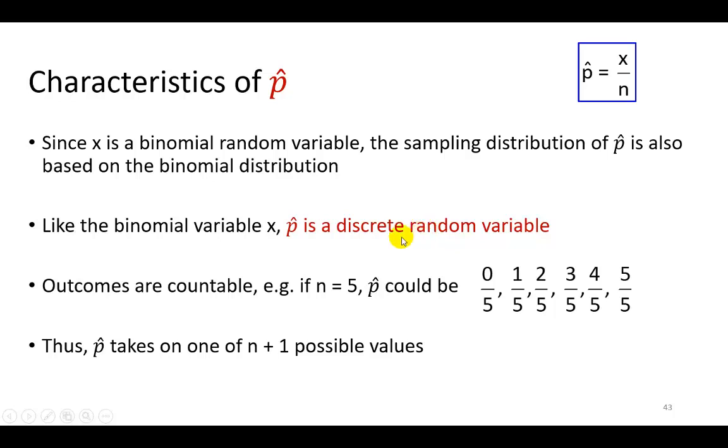You might say, wait a minute, isn't p hat a decimal value, and how can that be discrete? Yes, it can. While it is true that any variable with whole number outcomes is by nature a discrete variable, there are some variables that take on decimal values that can also be discrete, insofar as those outcomes are countable. For example, if we took a sample size of 5, p hat could be 0 out of 5, or 1 out of 5, 2 out of 5, all the way to 5 out of 5. The possible values of p hat range from 0 to 1. There's no other possible value, so the outcomes of p hat are countable, and as a result, it is a discrete random variable.